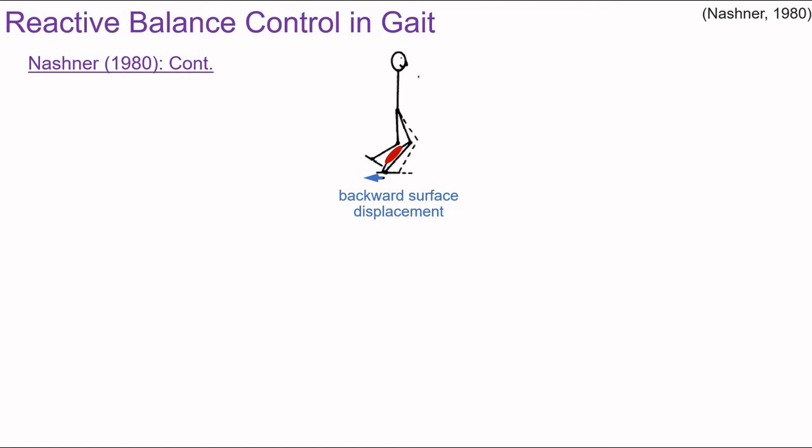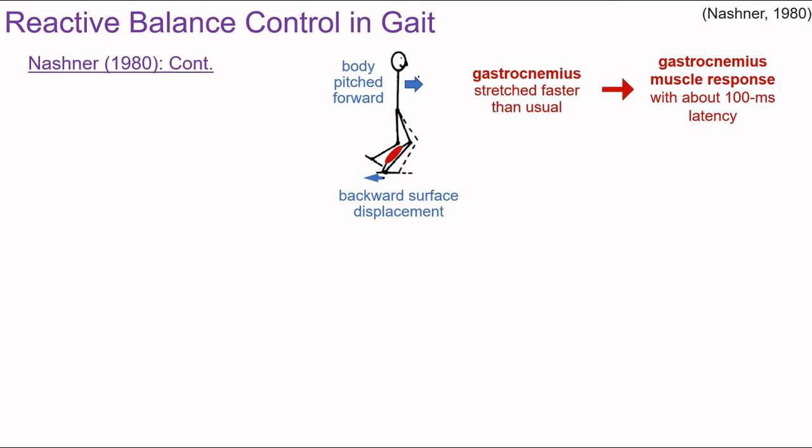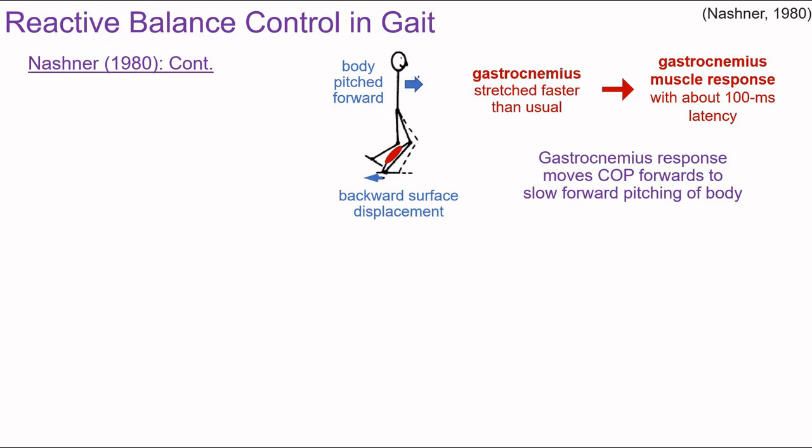Here we have a situation where the participant steps on the platform and the platform is translated backwards. This backwards surface translation pitches the body forwards, pulling the forefoot backwards and causing the gastrocnemius to be stretched faster than usual. The reactive response to this stretch is a muscle response in the gastrocnemius with about a 100-millisecond latency, which moves the center of pressure anteriorly to slow the forward pitching of the body.